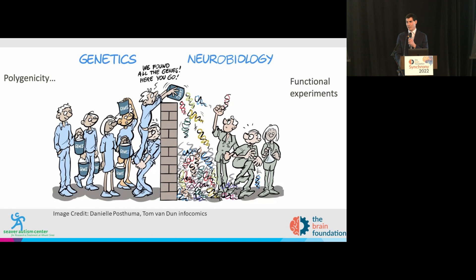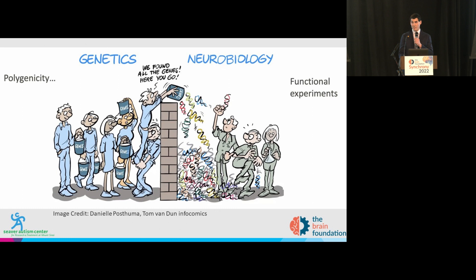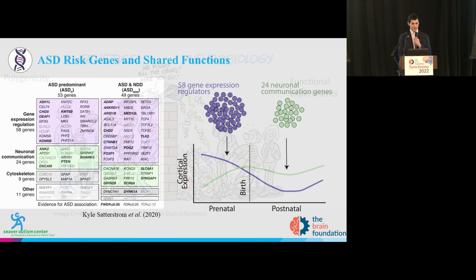Autism risk gene discovery has really been remarkably successful. In 2014, a study from the Seaver Autism Center identified for the first time 22 genes with mutations with high-confidence association to autism disease. In 2020, this number skyrocketed to 78, and just this year, the number has doubled again to 185 genes. I'm showing some of these autism genes ranked by their position on the chromosome and our confidence that mutations in these genes really contribute to autism.